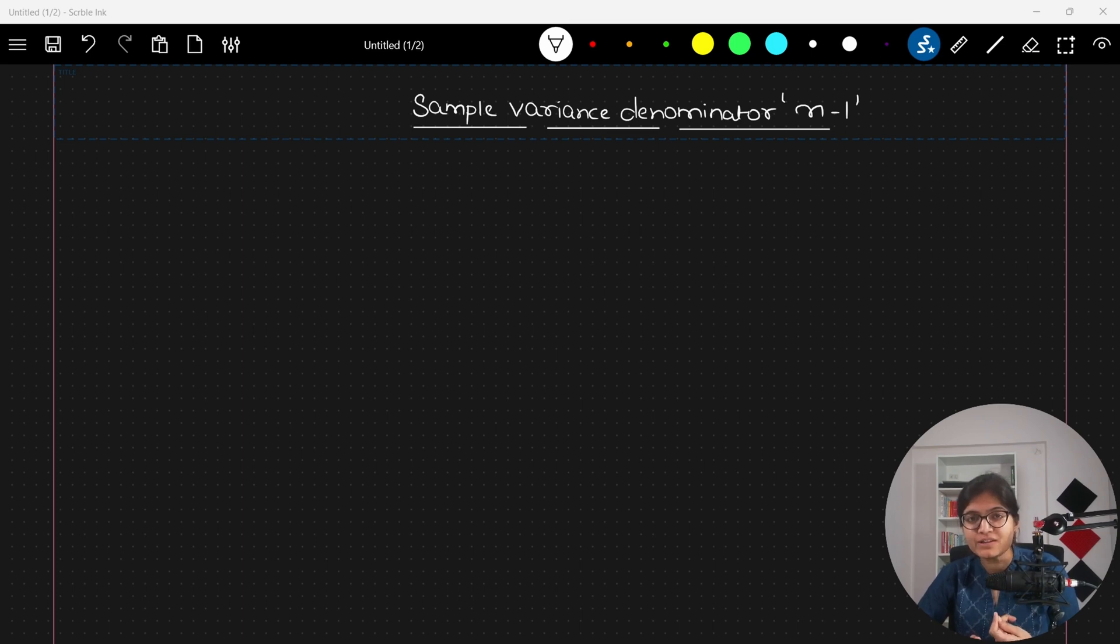What's the reason behind having a sample variance denominator as n minus 1, whereas in population, if you will see, we are dividing the value by capital N.